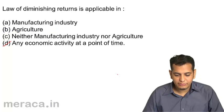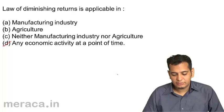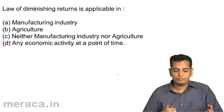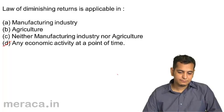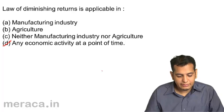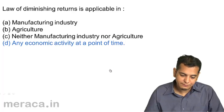The law of diminishing returns is applicable in: a) manufacturing industry, b) agriculture, c) neither manufacturing nor agriculture, d) any economic activity at a point of time. The answer is d — any economic activity at a point of time.